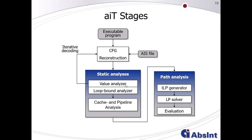Following the value analysis — which also computes effective addresses of memory accesses — AIT determines upper bounds for every loop iteration in the analyzed task. This works well for simple counter loops; more complex loops depending on outside decisions or complex computations will need to be bounded by the user.